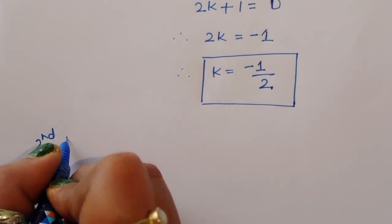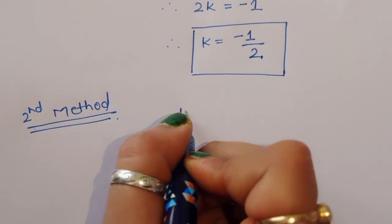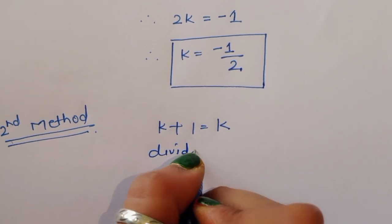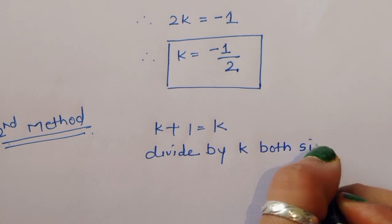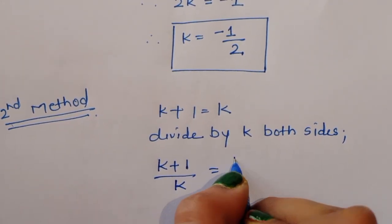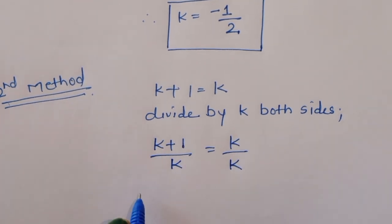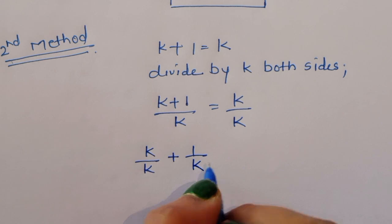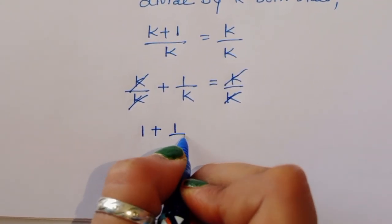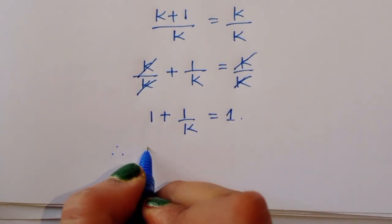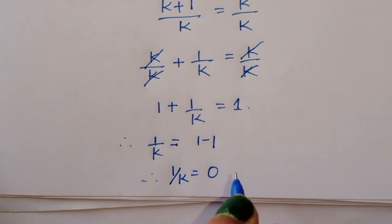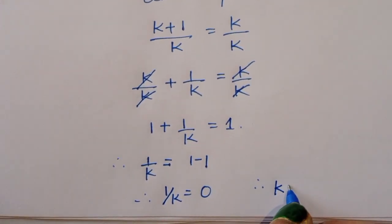Now using our second method to solve this question: √(k+1) = √k. We can do one thing here — divide both sides by k. So (k+1)/k is equal to k/k. Now separating terms: k/k + 1/k is equal to k/k. k/k cancels on both sides, so we get 1 + 1/k is equal to 1.